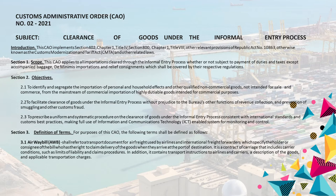Section 3. Definition of Terms. For purposes of this CAO, the following terms shall be defined as follows. 3.1 Airway Bill (AWB) shall refer to a transport document for air freight used by airlines and international freight forwarders which specify the holder or consignee of the bill who has the right to claim delivery of the goods when they arrive at the port of destination.